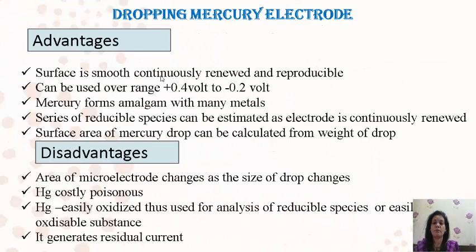A series of reducible species can be estimated continuously with renewed surface area. The surface area of the mercury drop can be calculated from the weight of the drop. These advantages of the mercury electrode make it useful to determine the concentration of the metal ion which is reduced or oxidized during the study.